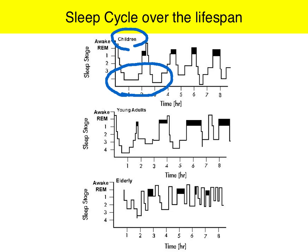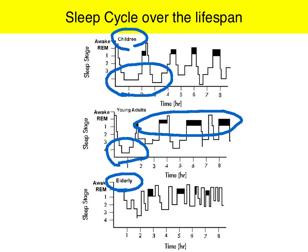Then when we get to adolescence and young adulthood, we're still having that stage 3 and 4 of non-REM, with some significant REM in there. And then by the time we're elderly, we have very little, if any, slow-wave sleep. Most of the sleep is actually spent in stage 1 and 2 of non-REM, with some REM in between.